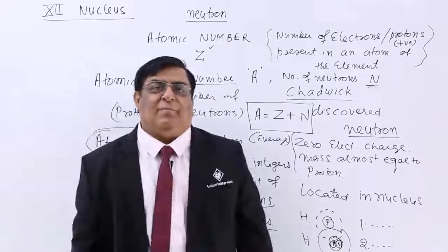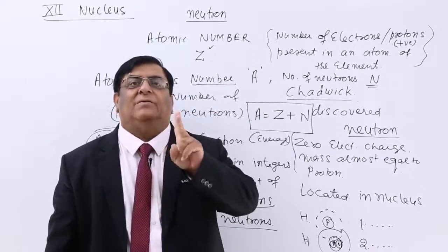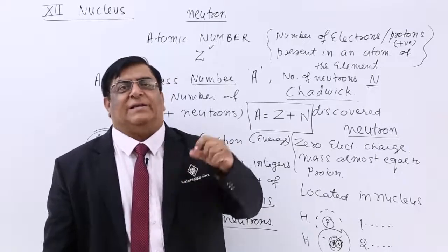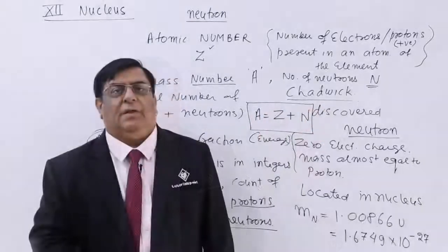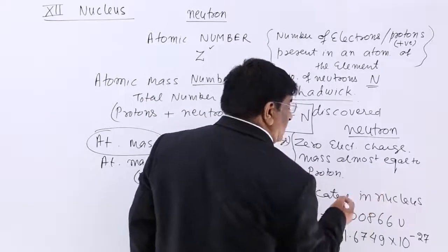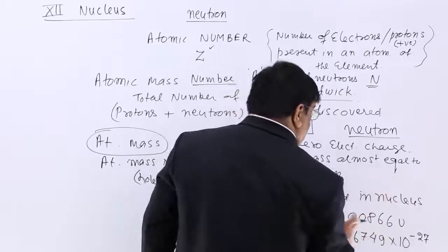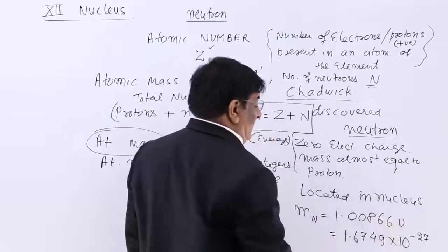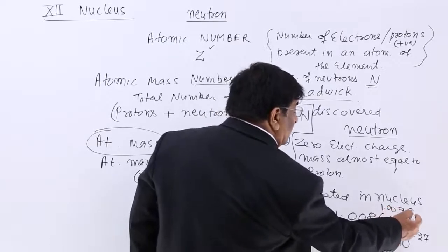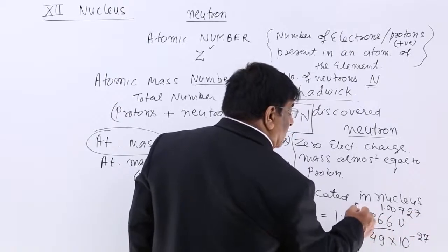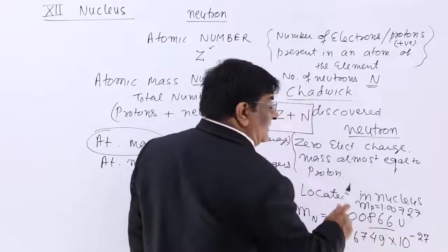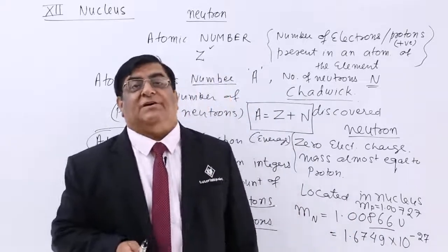In the nucleus family we have two particles: one proton and one neutron. Coming to the numbers, we have three types: Z, A, and N which is A minus Z. The mass of the neutron is found to be 1.00866 units. Comparing with the mass of the proton, the neutron is heavier than the proton — please remember, neutron is heavier than proton.